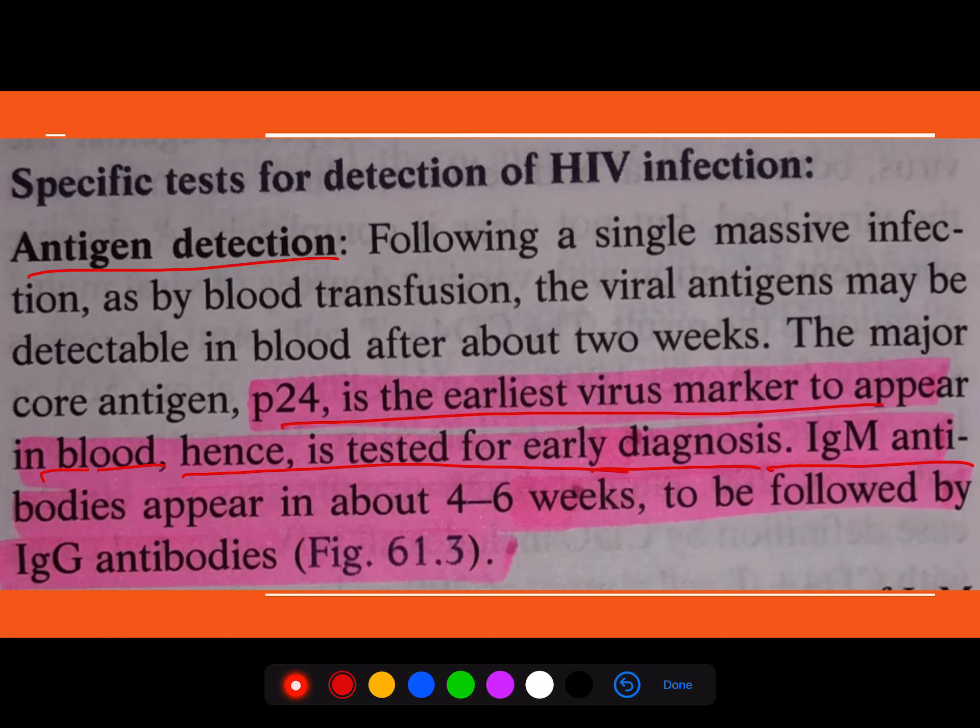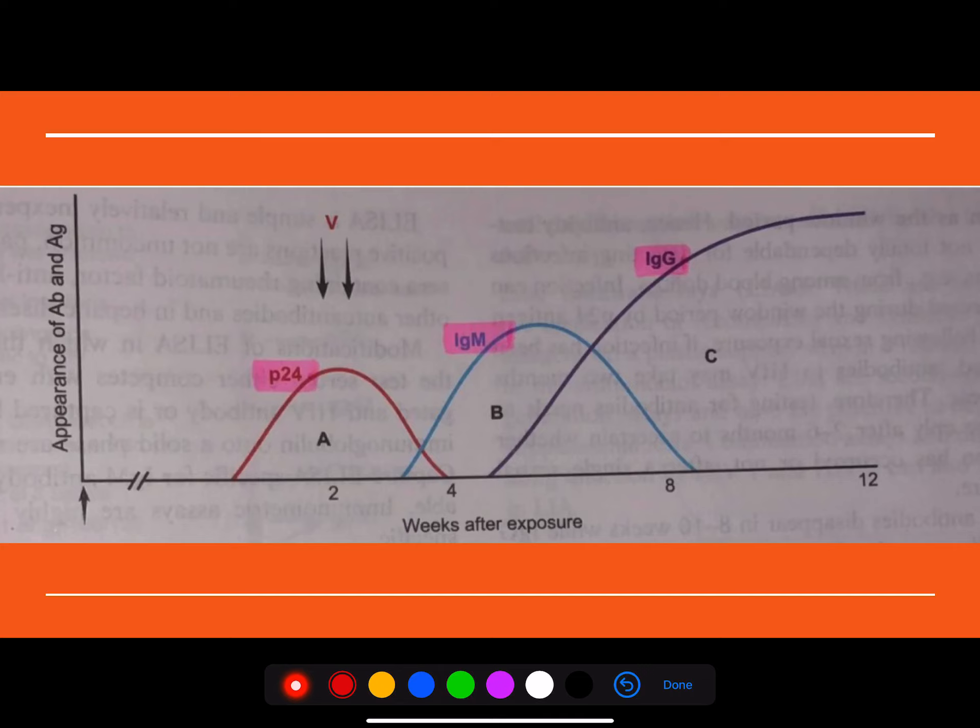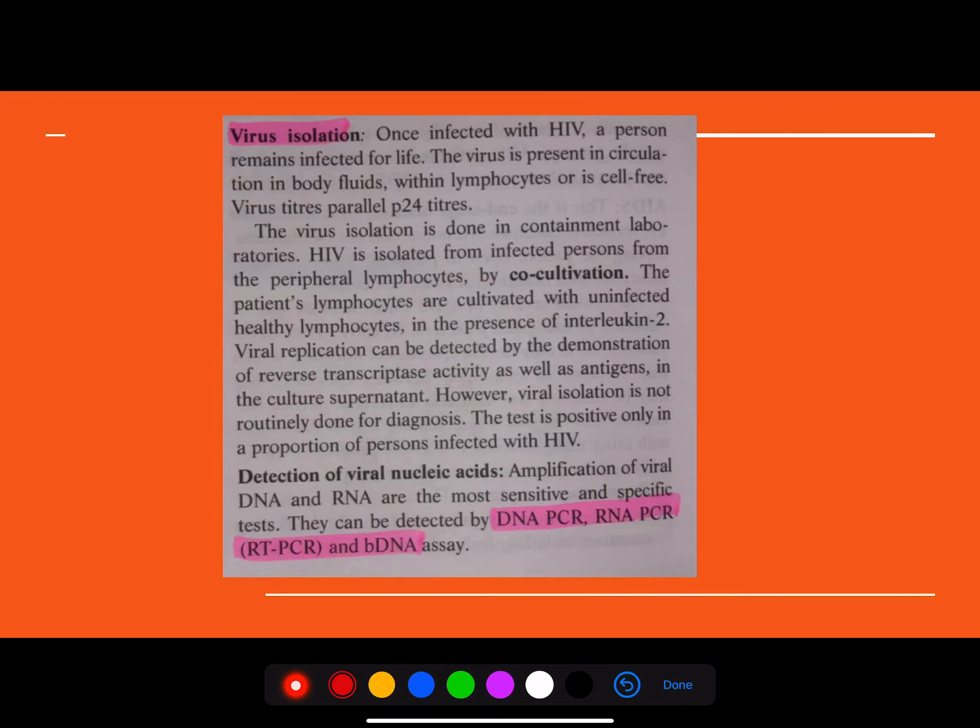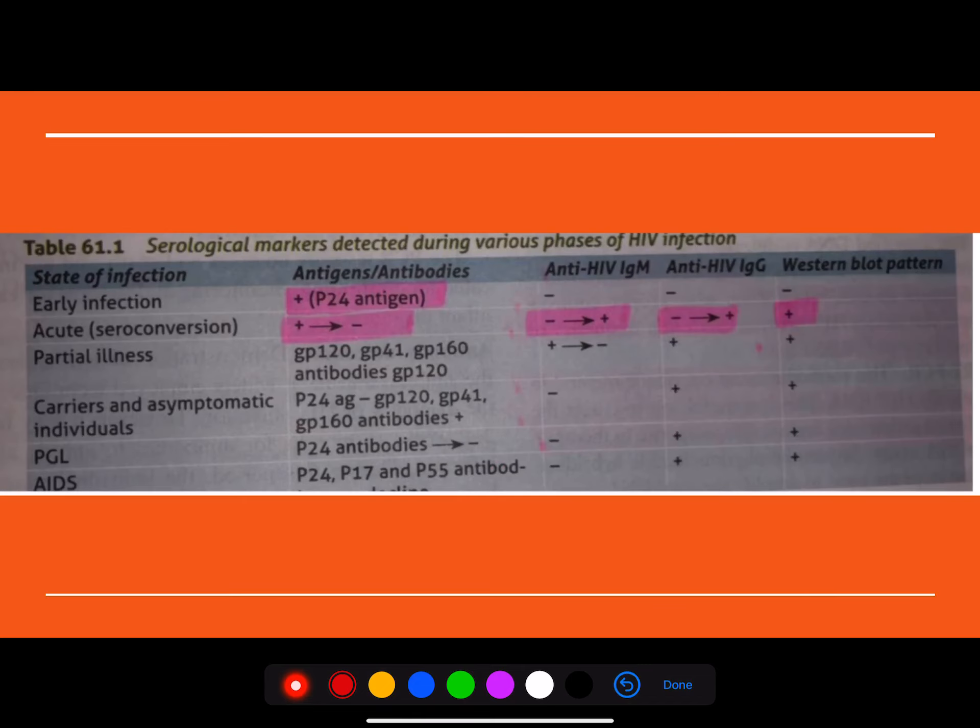And followed by the IgM, similarly as in the case of your hepatitis B, followed by the IgG. So you can see this is the first, followed by IgM, followed by IgG. So please do make a note of all these viral isolations, how you can detect and everything. And of course, the same inference as that of your hepatitis B, what are the specific markers for detection of hepatitis virus at different levels or different phases?